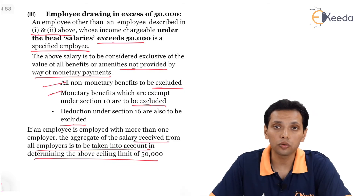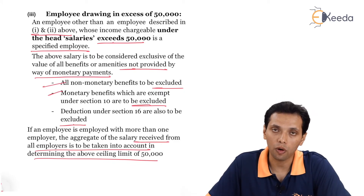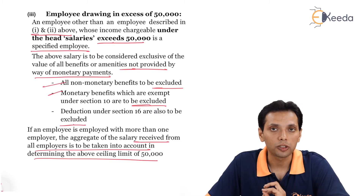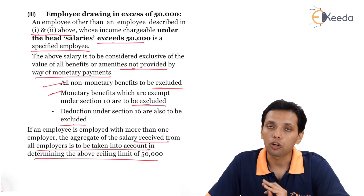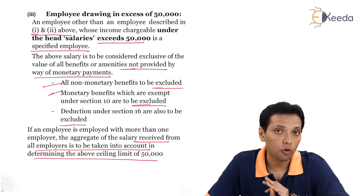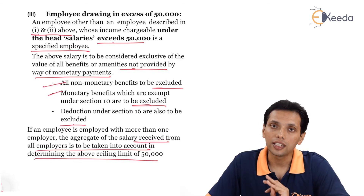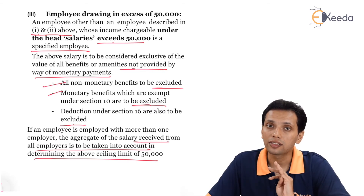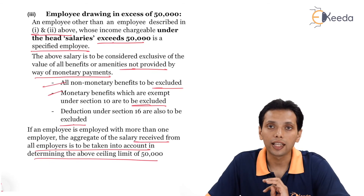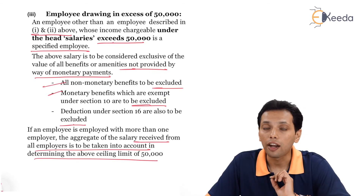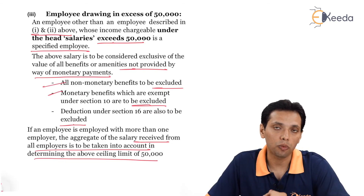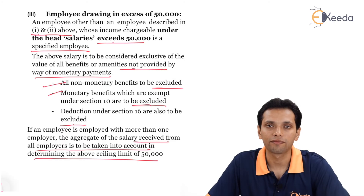Friends, this concludes the definition of specified employees. Broadly, there are three categories: a director employee is a specified employee; a person with beneficial ownership of 20% or more of the voting power is a specified employee; and a person, other than the above, drawing a salary of more than 50,000 is a specified employee. Accordingly, any perquisite provided by the employer to such a specified employee will be subject to tax in the hands of the employee and accordingly taxable. Thank you.